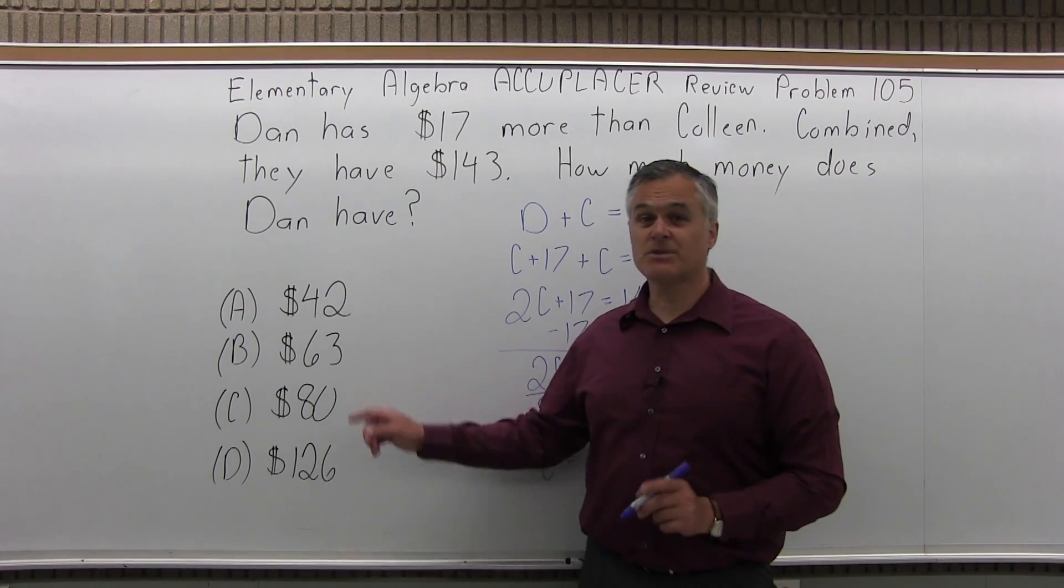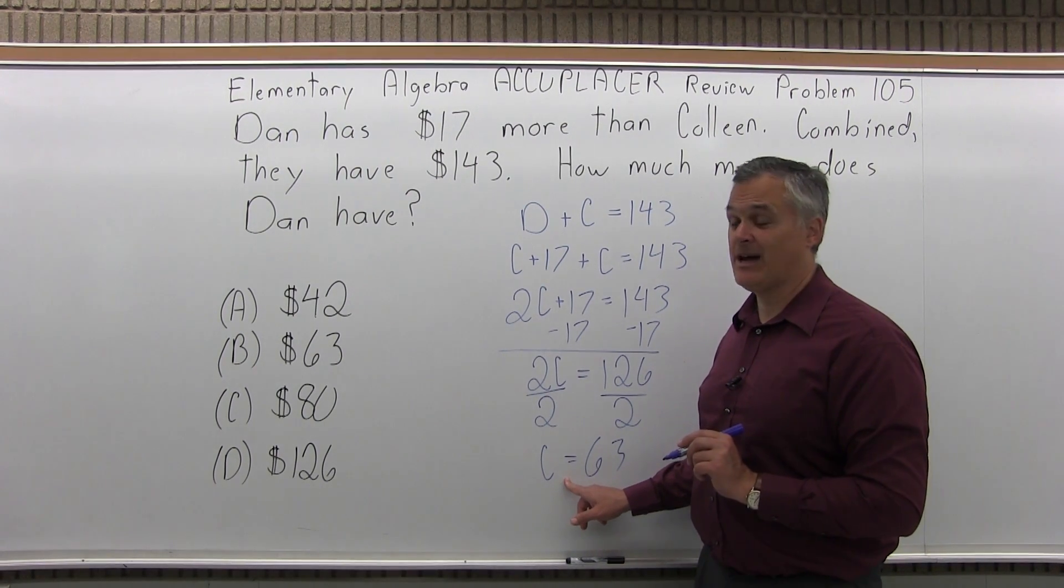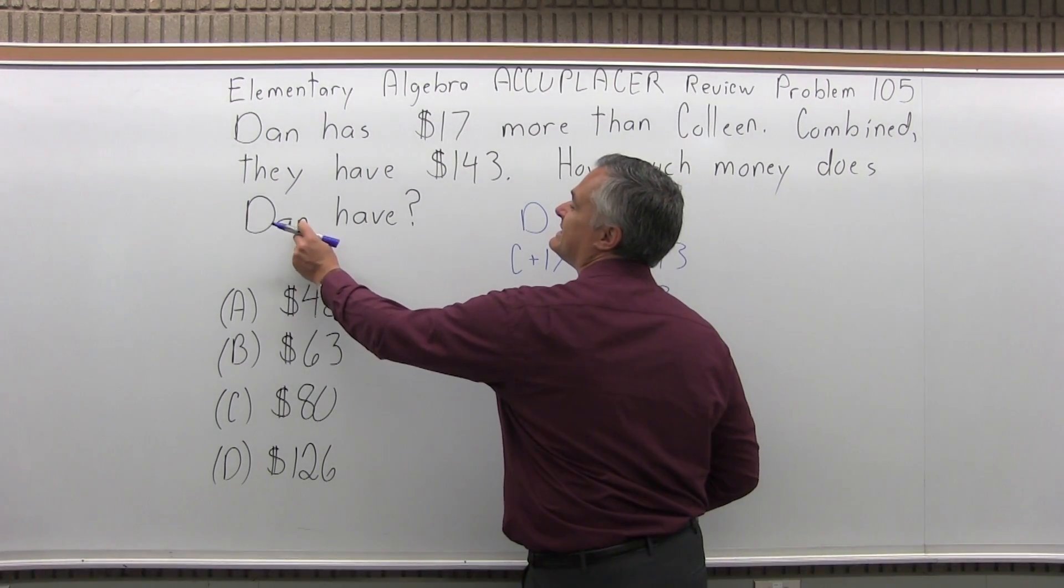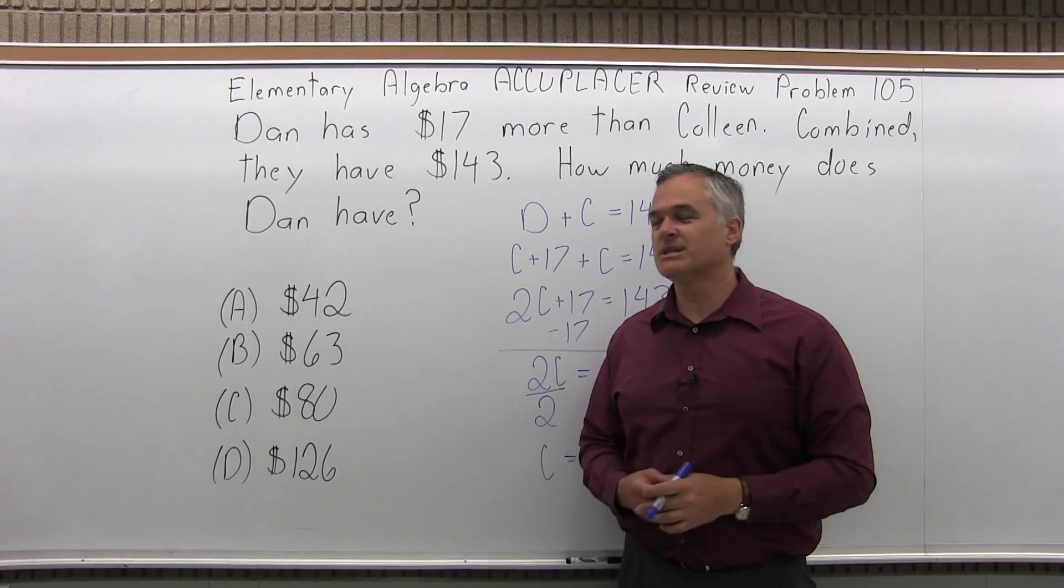And if you notice, that is one of the options. But be careful. The question did not ask how much money does Colleen have. That is how much money Colleen has. It says how much money does Dan have. So you have to pay attention, and they put in answers with common mistakes on purpose.